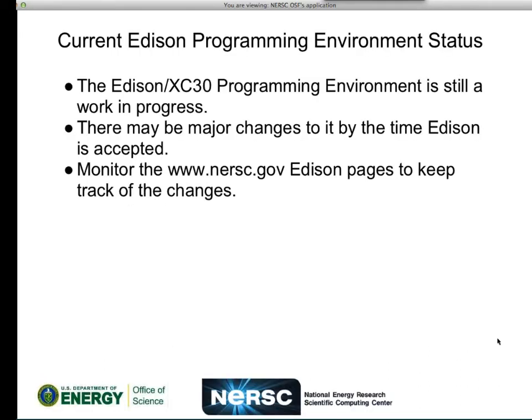Before I give you the introduction, I'll give you the caveats. The Edison programming environment is a moving target. We have a lot of requests to make it easier to use, and a lot of requests for changes. All this does is describe how you compile, link, and run codes now and how it's different from on Hopper. There may be major changes to this environment by the time we accept this system, and we'll keep everything up to date on the Edison webpages about our current recommendations.